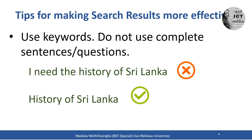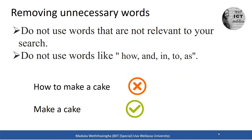The next tip is removing unnecessary words. Do not use words that are not relevant to your search, such as 'how,' 'what,' 'in,' 'as,' or other supportive words. For example, if you want to know how to make a cake, don't type 'how to make a cake' — just type 'make a cake.'